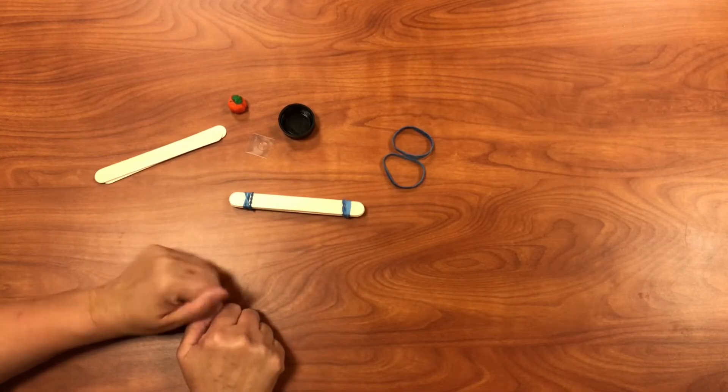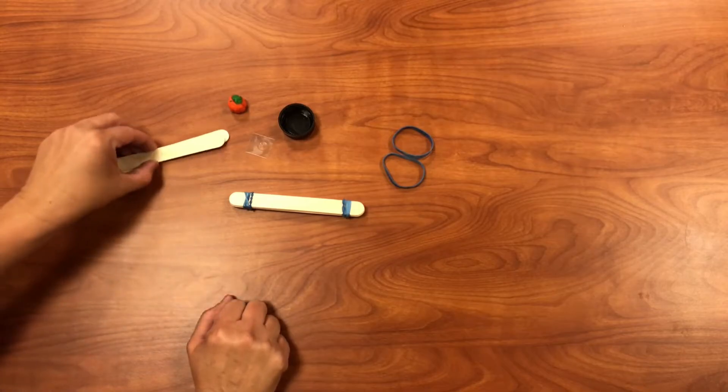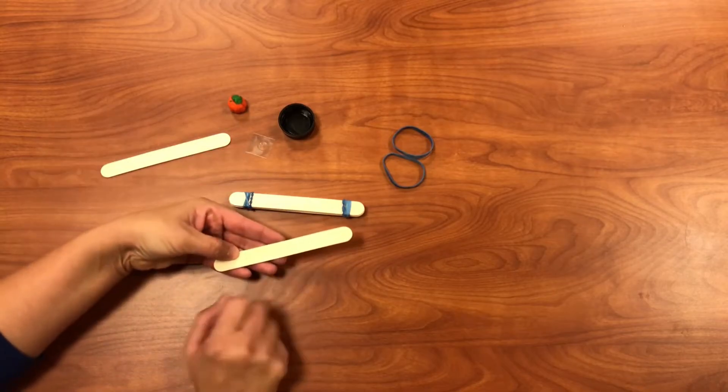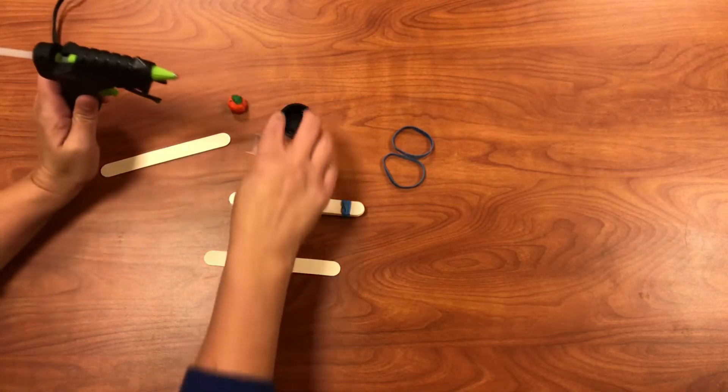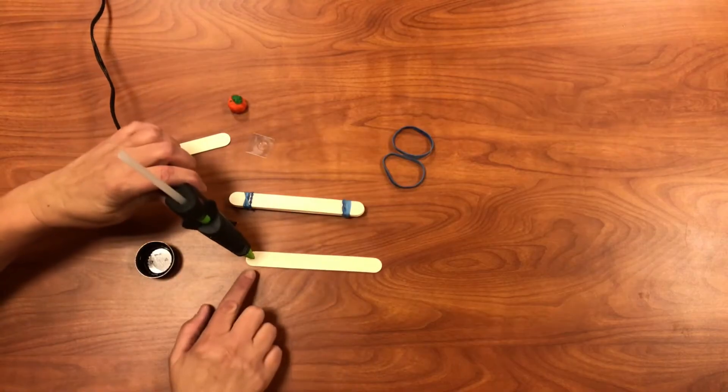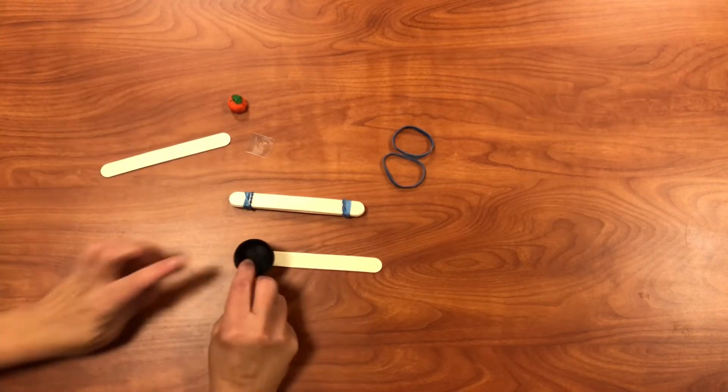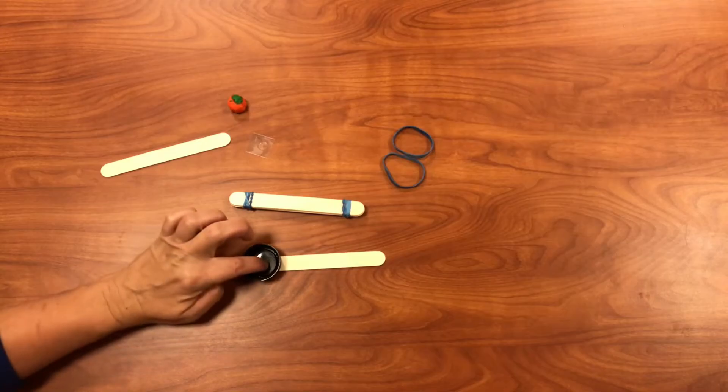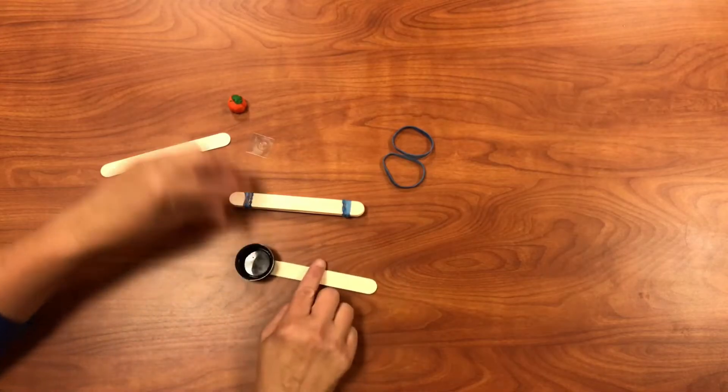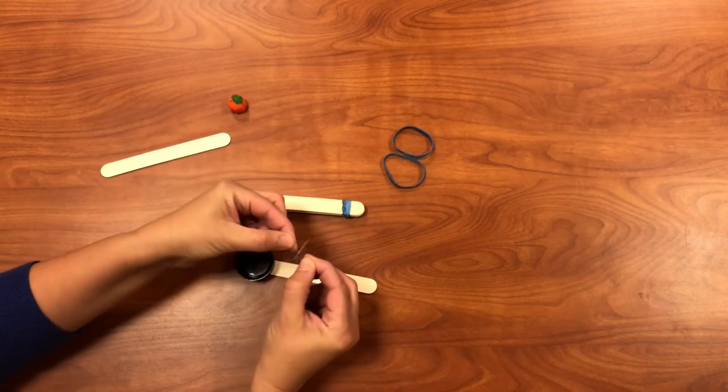So next you're going to take a stick, and if you do have a hot glue gun handy, go ahead and add a little hot glue to the end and then stick your lid on, so it will look like this.